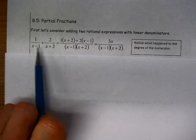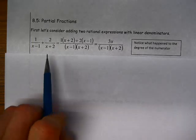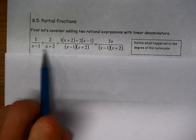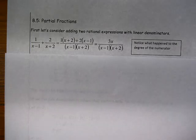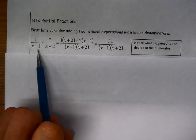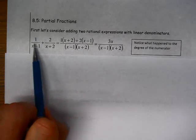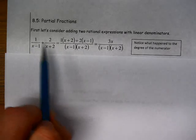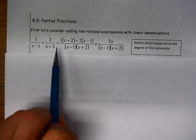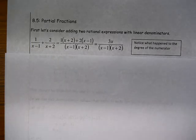They have two different linear denominators. How we might add these two expressions up? We're going to find a common denominator, so the common denominator is (x-1)(x+2). I have to multiply this numerator by x+2 and this numerator by x-1.